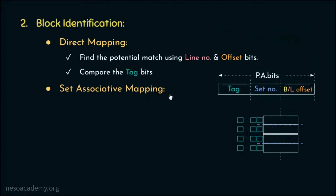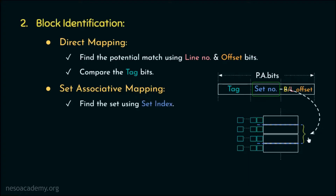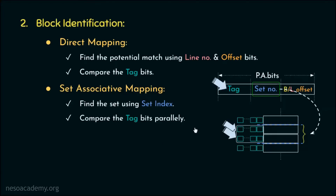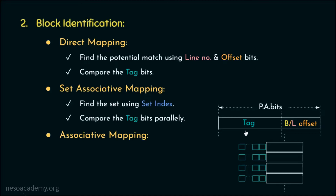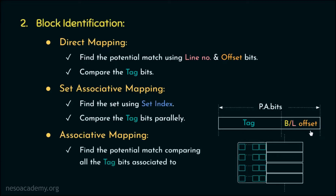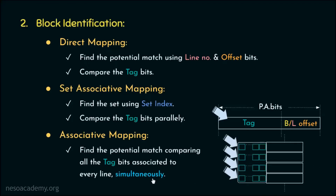In set associative mapping, the physical address is split into tag bits, set index, and block offset. We locate the set using the set index, then compare the tag bits against all tags of all lines in that set in parallel. In fully associative mapping, the address contains only tag bits and block offset, and the tag is compared simultaneously against every line in the cache.